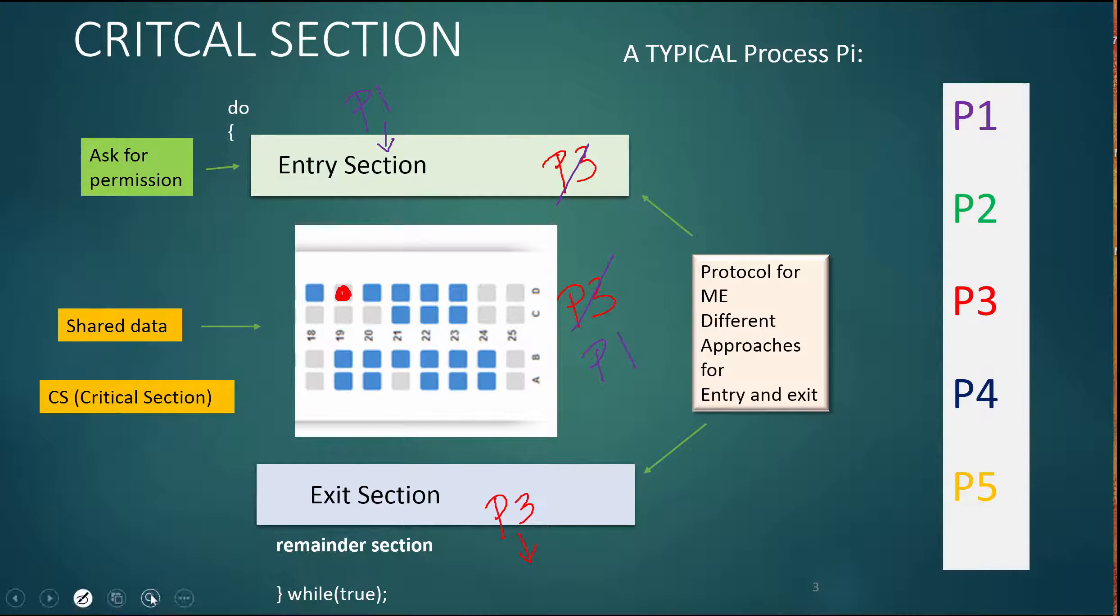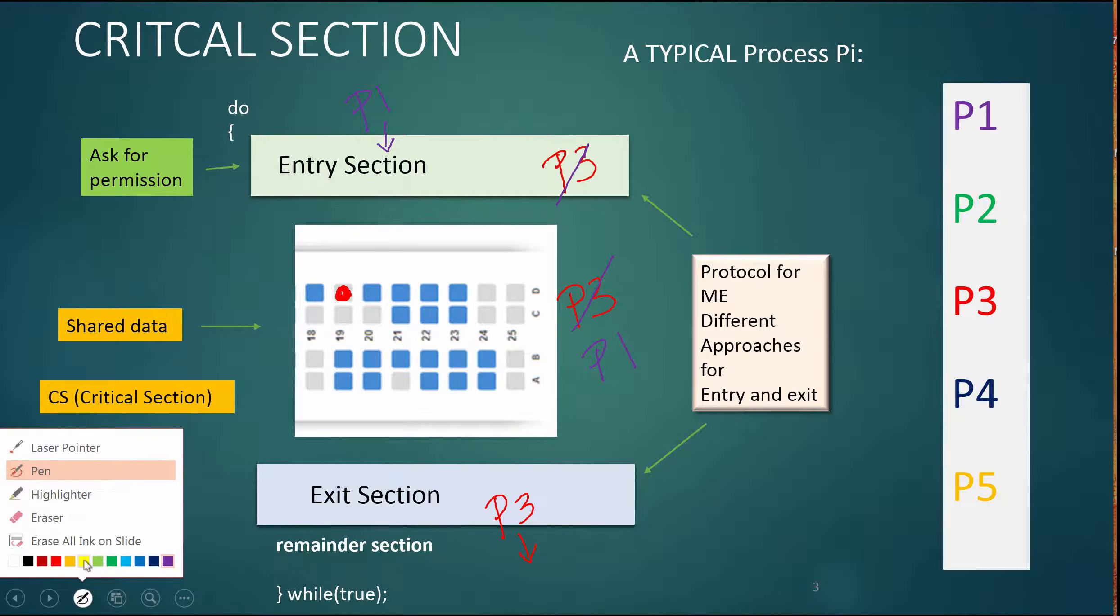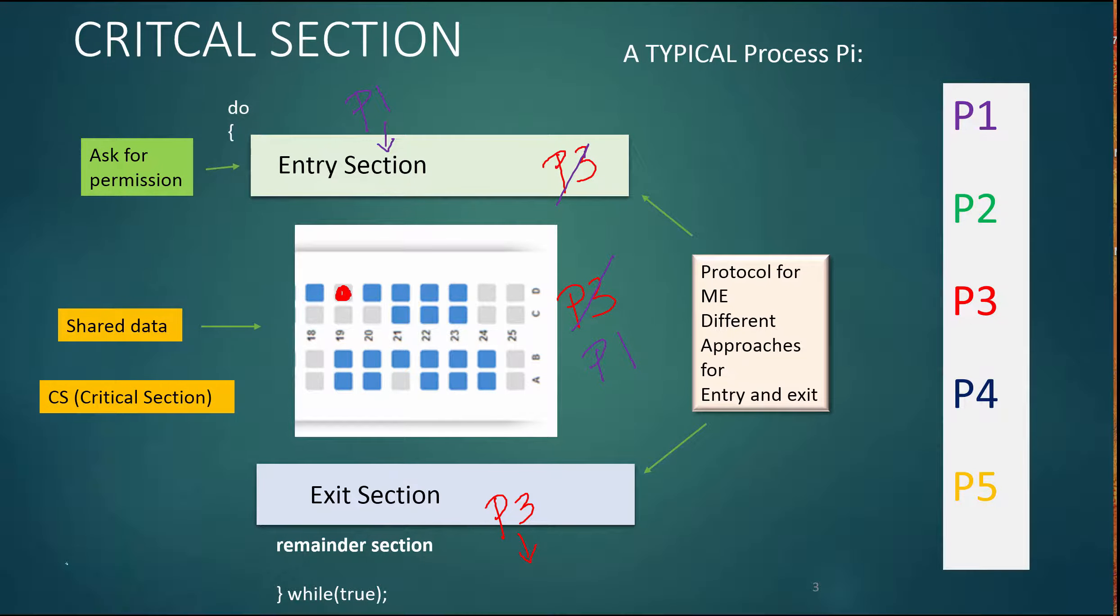So now if any of the other processes like P4 or P5 come along, say P5 now comes along, P1 is already in there, P5 comes along, P5 would then be blocked out. So that's just the very basic idea of the critical section problem and how you control access to the critical section problem.